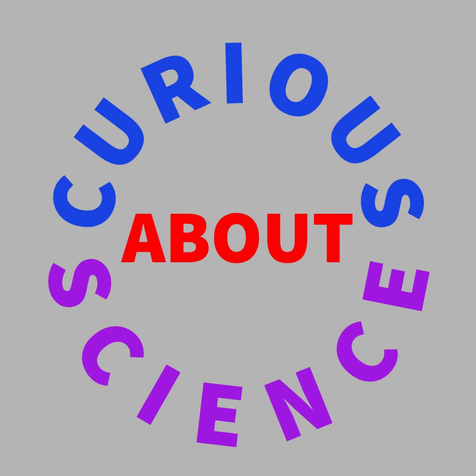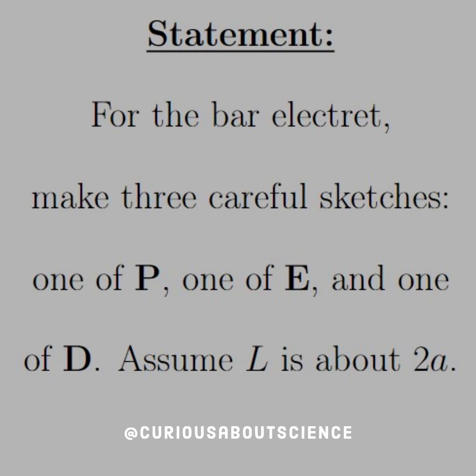Hello there, we've got a quick problem today. The statement reads: for the bar electret, make three careful sketches, one of P, one of E, and one of D. Assume that the length is about twice the radius.